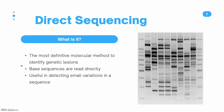Here, the base sequences are read directly. Usually, direct sequencing methods involve some sort of electrophoresis in which you can visualize bands that correspond to whatever base is in the sequence. This is especially useful in detecting small variations in a specific sequence.